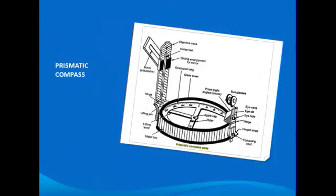Now the construction of prismatic compass. It consists of a cylindrical metallic box of 8 to 12 centimeter diameter. In the center of which is a pivot carrying the magnetic needle, which is already attached to the graduated aluminum ring with the help of an HT cap. The ring is graduated to half a degree and is read by a reflecting prism.